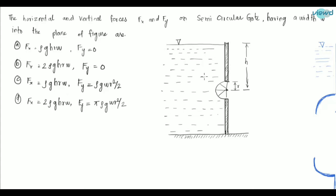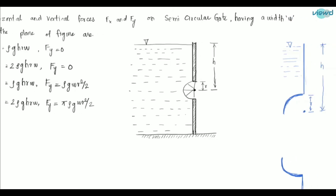There is a semicircular gate of radius R. The height from the free surface to the center is H, and there is a width W in the third dimension. We need to find the hydrostatic forces on this gate.